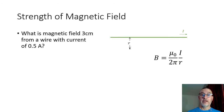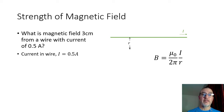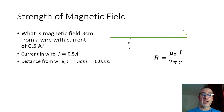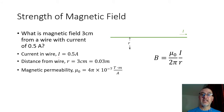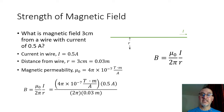Let's do an example calculation. What is the magnetic field 3 centimeters from a wire with a current of 0.5 amps? Our equation is B = μ₀/2π × I/R. Well, 0.5 amps is the current I. Our 3 centimeters is R, the distance from the wire — we have to convert that to meters, so we get 0.03 meters. And of course mu naught, the magnetic permeability, has the value 4π × 10⁻⁷ Tesla·meters per amp.